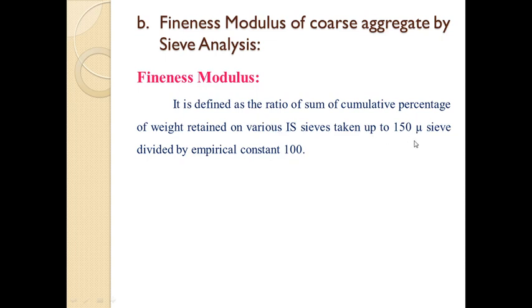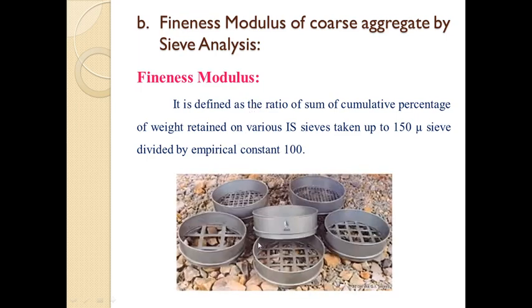They are not taken into account the 75 micron or pan. So up to 150 micron cumulative weight percentage retained on the IS sieves taken up to 150 micron divide by 100 we get the fineness modulus of that sample. For this we use the 30 cm diameter IS sieves. It ranges from 80 mm to 75 micron.